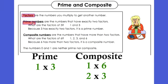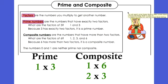Then we're going to learn about prime numbers. Prime numbers are numbers that have exactly two factors. What are the factors of 3? Example: 1 and 3. There's only one way to get 3 when you multiply, and it's 1 times 3 — there's no other way. Because 3 has exactly two factors, we call that a prime number.